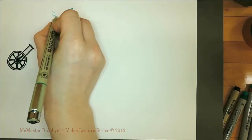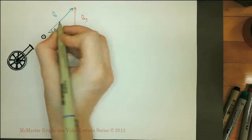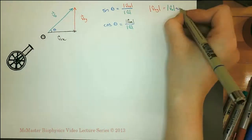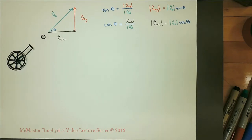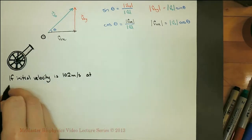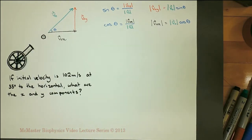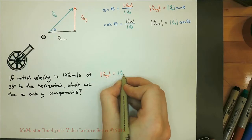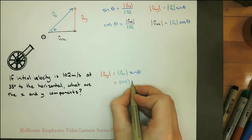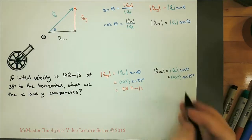How do we separate a velocity into its components? Because the y-axis and x-axis are perpendicular to one another, we have a right-angled triangle, and we can use SOHCAHTOA to solve for the velocity along each axis. For example: if the initial velocity is 102 meters per second at 35 degrees to the horizontal, what are the x and y components? Substituting into the equations for x and y components, we solve for the velocity in the x and y directions.